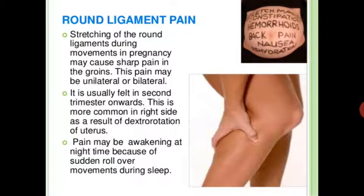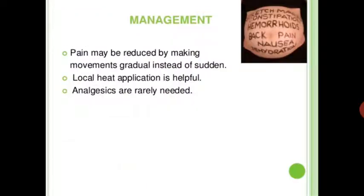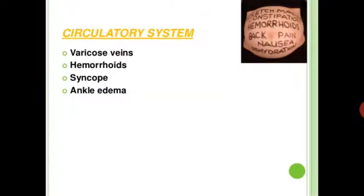The pain may be unilateral or bilateral, usually felt in the second trimester onward. It is more common on the right side as a result of dextrorotation of the uterus. Pain may awaken the patient at night due to sudden rolling-over movement during sleep. Management: pain may be reduced by making movements gradually instead of suddenly. Local heat application is helpful; analgesics are rarely needed.